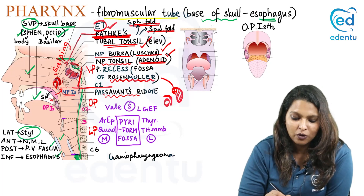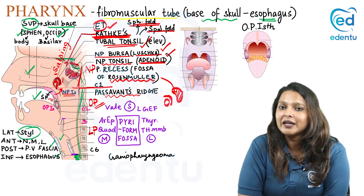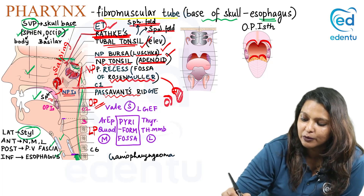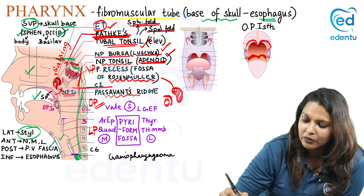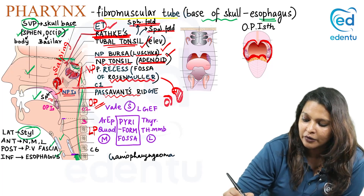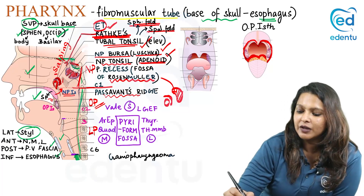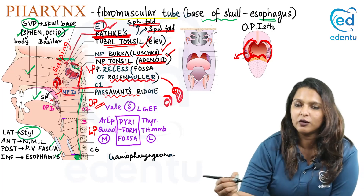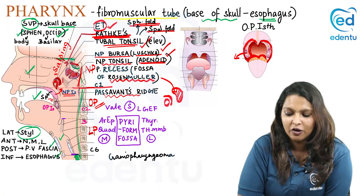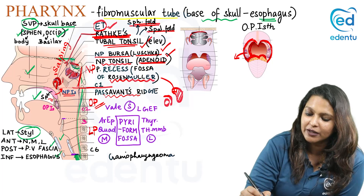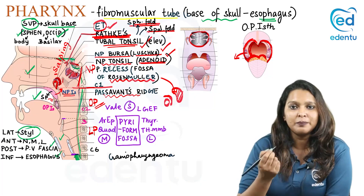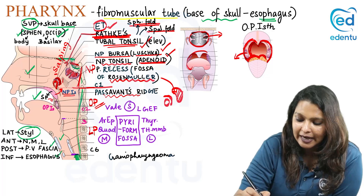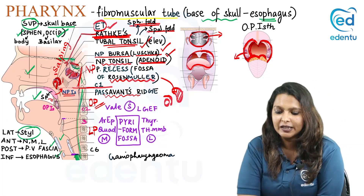The oropharynx is related anteriorly to the oropharyngeal isthmus, which is bounded by the soft palate above, the dorsum of the tongue below, and the palatoglossal fold on either side. There is a fossa called the tonsillar fossa situated between the palatoglossal and palatopharyngeal folds, which contains the palatine tonsil. The anterior aspect of the nasopharynx is related to the choana or posterior nasal aperture.